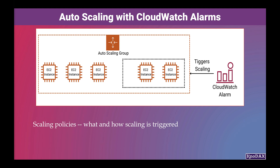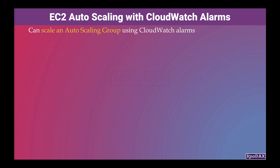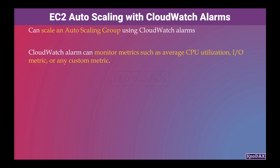It is possible to scale an autoscaling group using CloudWatch alarms. EC2 autoscaling works using CloudWatch alarms, which can monitor metrics such as average CPU utilization, IO metrics, or any custom metric.